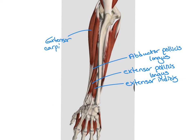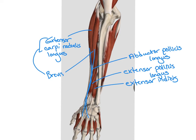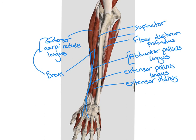On the radial side, we have our extensor carpi radialis longus, which comes down and attaches to the second metacarpal head. Then we also have our extensor carpi radialis brevis, which comes down and attaches to the third metacarpal head. Deep to those two muscles, we can see our supinator, and then we have that adductor pollicis longus just to the medial side. Here we can also see our flexor digitorum profundus, as well as our flexor digitorum superficialis, and our flexor carpi radialis.